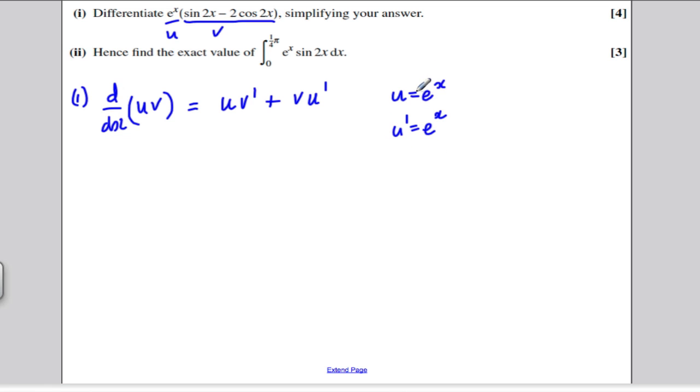And if we take the next function v to be sin of 2x minus 2 cos of 2x, what would happen if we differentiate this? If we differentiate sin 2x, we get 2 cos 2x. And if we differentiate minus 2 cos 2x, the differential of cos 2x is minus 2 sin 2x. So multiplying by this minus 2, I would end up getting plus 4 sin of 2x.